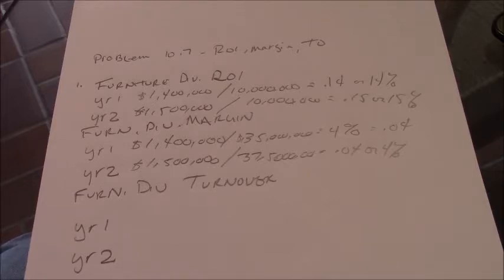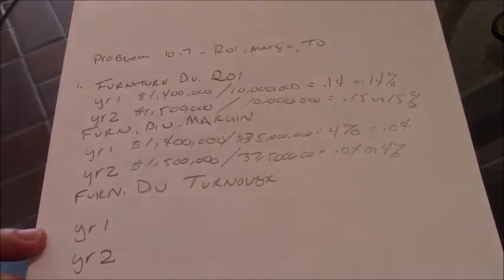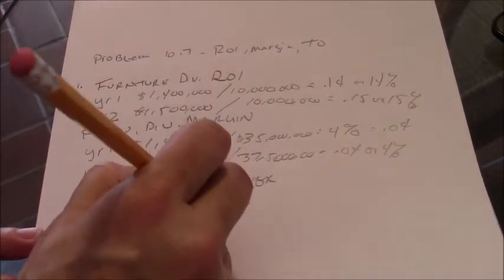So finally, turnover. How do we turn over our assets relative to our sales? So ATO. You'll sometimes hear this called ATO. We take our sales for year 1, 35 million.